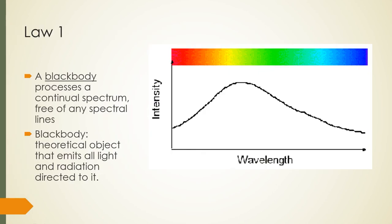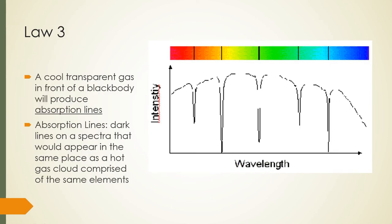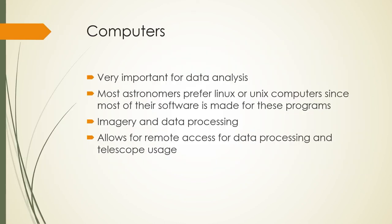Kirchhoff's first law: a black body produces a continuous spectrum free of any spectral lines — all colors. A black body is a theoretical object that emits all light and radiation directed to it. The second law: a hot transparent gas will produce emission lines when light passes through it — a series of bright lines against a dark background that tell you what elements are present. The third law: a cool transparent gas in front of a black body produces absorption lines — dark lines on a spectrum appearing where a hot gas cloud of the same elements would produce emission lines.